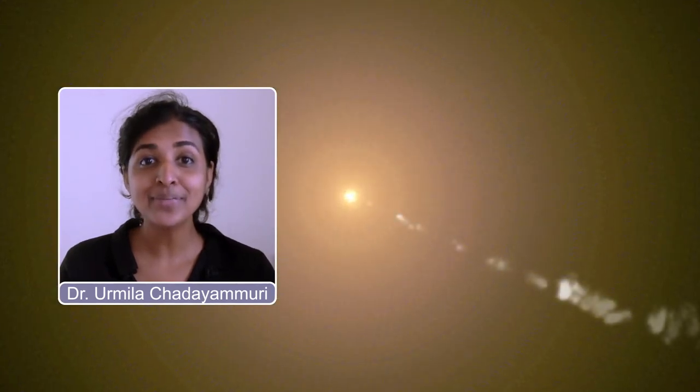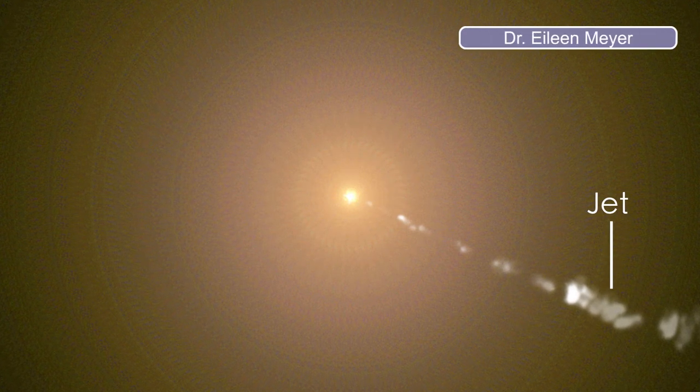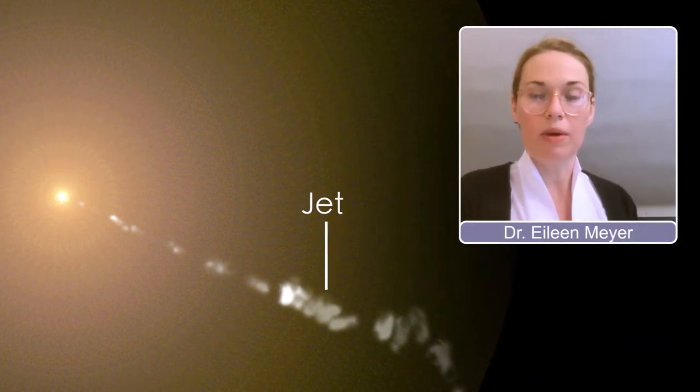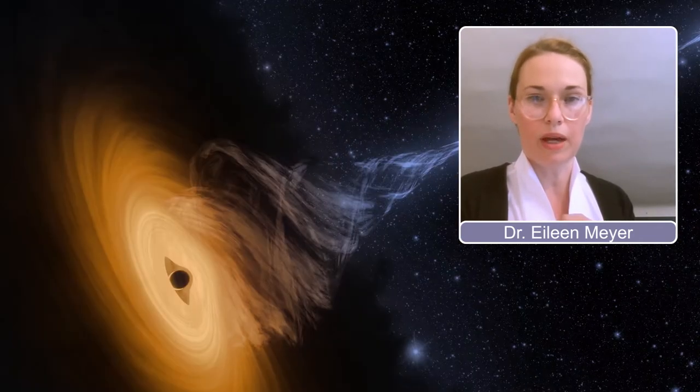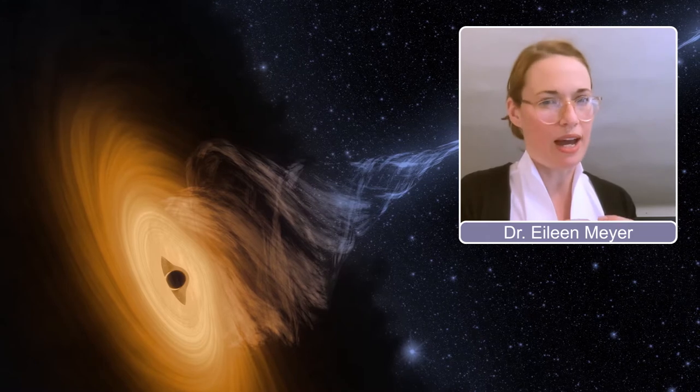M87 has one of the most dramatic examples of what we call a jet. This is coming from the region immediately surrounding the supermassive black hole. First you'll notice that it appears to come out of the center of the galaxy. And it does in fact come from very close to the black hole, but it's not actually coming out of the black hole.